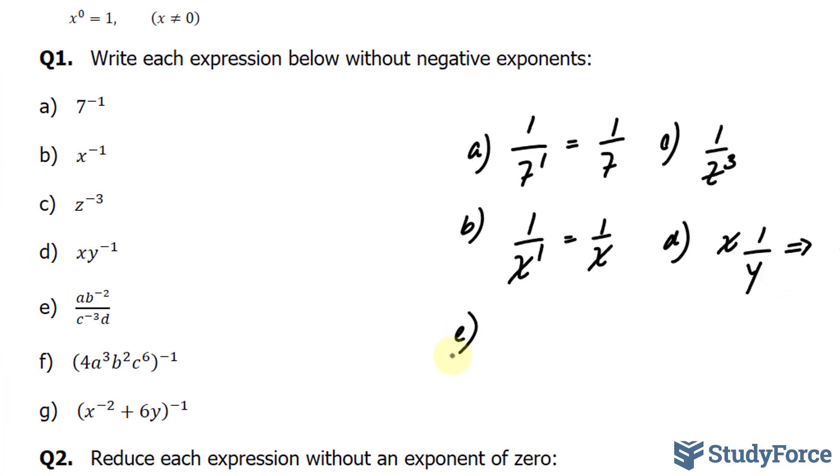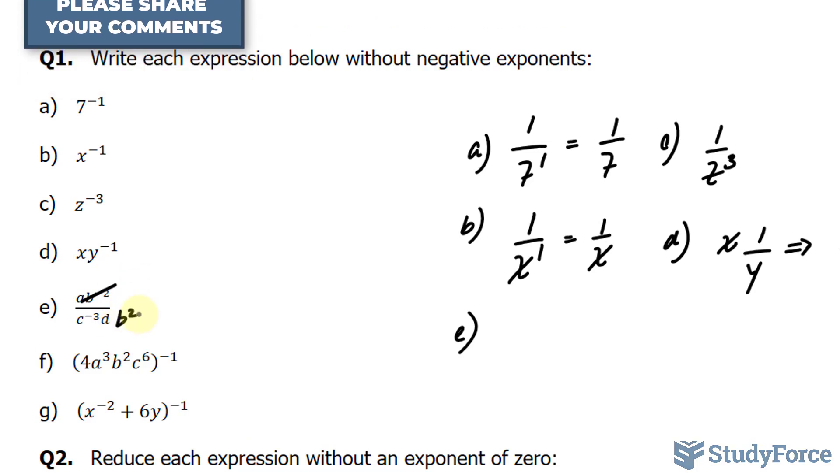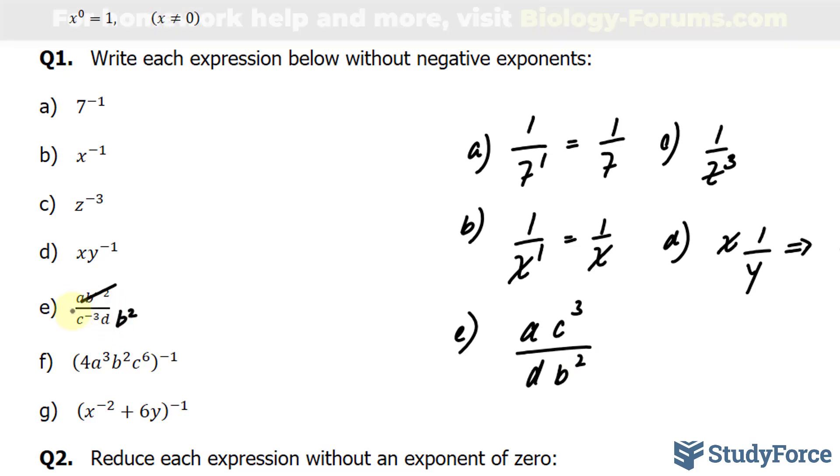Question E is more of the same. We have a times b to the power of negative 2. This b to the power of negative 2 becomes b to the power of 2 at the bottom. And c to the power of negative 3, which was at the bottom originally, goes to the top, where we have a times c to the power of 3 over d times b to the power of 2. The a and the d were left untouched.